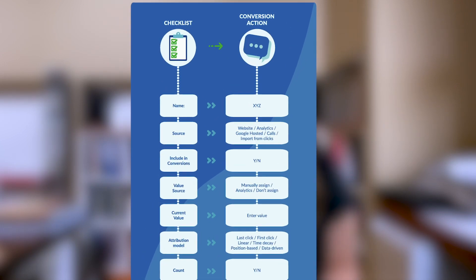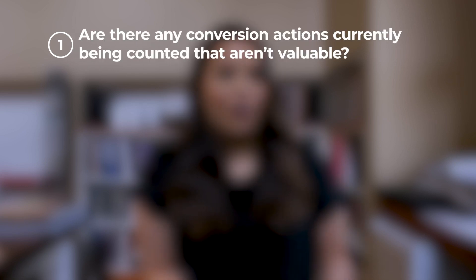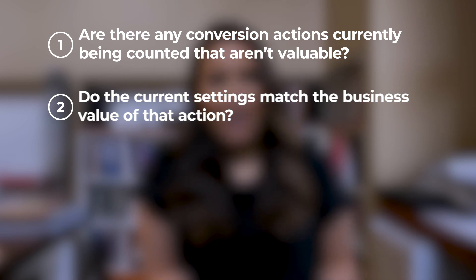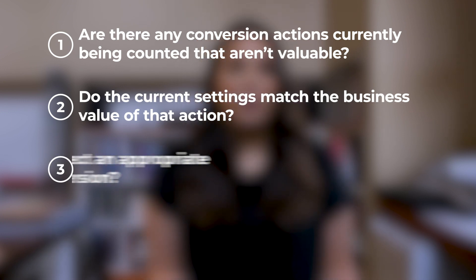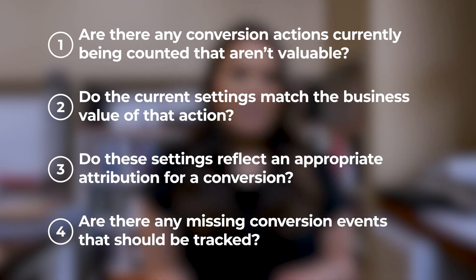During this pullback period, it's a good time to audit your current conversion actions and consider updating them. To audit your conversion actions, you can use this template. After laying out all of your current conversion actions, you should ask yourself: Are there any conversion actions currently being counted that aren't valuable? Do the current settings match the business value of that action? Do these settings reflect an appropriate attribution for a conversion? Are there any missing conversion events that should be tracked? Be methodical and be careful with your changes to minimize risk in your account.